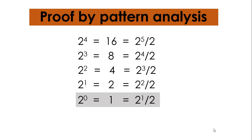How? That's 2 power 1 divided by 2. So proof by pattern analysis gives a fair idea of why anything power 0 equals to 1. Hence, we conclude that x power 0 equals to 1.